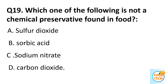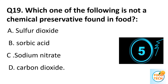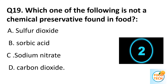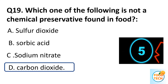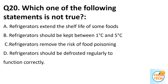Question 19. Which one of the following is not a chemical preservative found in food? A. Sulfur dioxide. B. Sorbic acid. C. Sodium nitrite. D. Carbon dioxide. Answer D. Carbon dioxide.